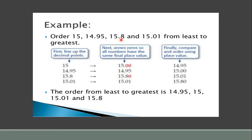Very first, you line up the decimal points. You can see: 15, 14.95, 15.8, 15.01. Next, add zeros so all numbers have the same number of decimal places. So I made them equal — two decimal places each. Finally, compare and order using place value. First line up the decimal points, then add zeros to make all numbers have the same final place value, then compare.